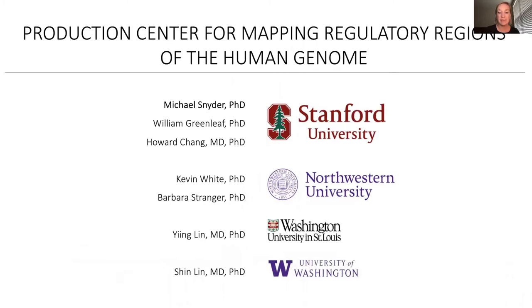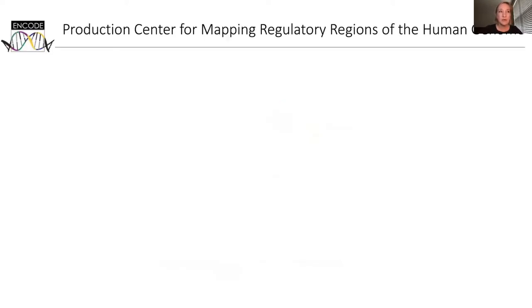Our production center is led by Professor Mike Snyder, together with Professor Greenleaf and Professor Chang here at Stanford. We are working very closely together with our collaborators at Northwestern University in Chicago, and with two surgeons at Washington University and University of Washington. Although our ability to determine the genome sequence of individuals is becoming easier, our understanding of the function of most of the human genome is still limited. Mapping of regulatory information is particularly crucial since most common variants associated with human diseases lay outside of coding regions.